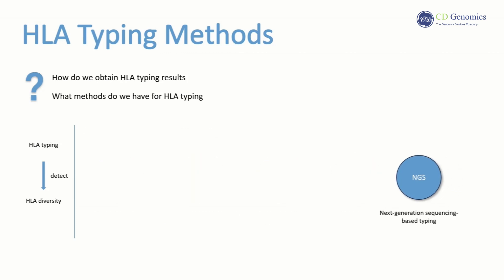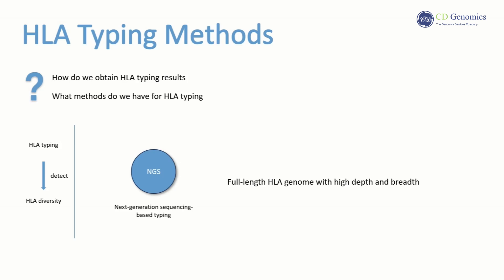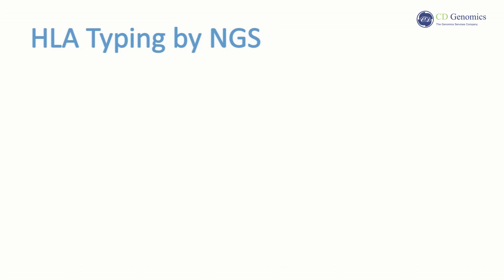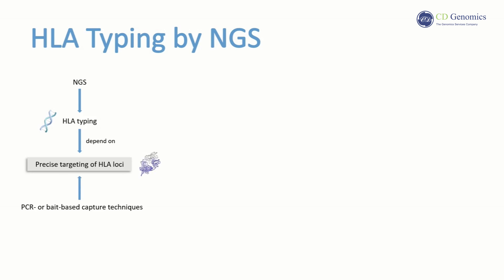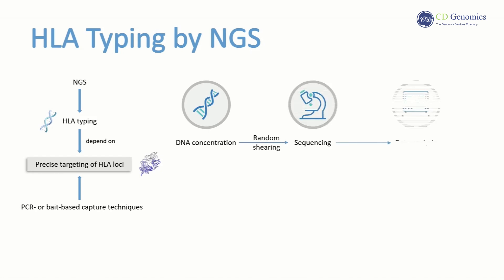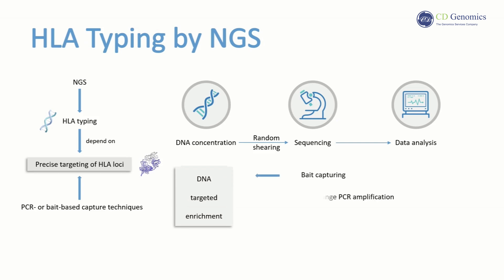With the rapid development of NGS technology, it holds a prominent advantage in HLA typing. NGS technology involves the sequencing of the full-length HLA genome with high depth and breadth. NGS-based methodologies depend on the precise targeting of the pertinent HLA loci, accomplished through either PCR or bait-based capture techniques. Initially, the concentration of the specific DNA of interest is undertaken, thereafter leading to the sequencing of randomly sheared DNA fragments, culminating in rigorous data analysis. The targeted enrichment of the DNA can be achieved through bait capturing, long-range PCR amplification, or shorter PCR amplicons encompassing the region of focal interest.